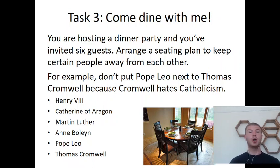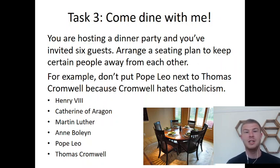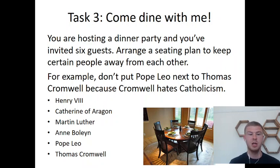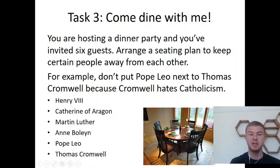Last task — a fun one to finish with. You're hosting a dinner party and you've invited six guests: Henry VIII, Catherine of Aragon, Martin Luther, Anne Boleyn, Pope Leo, and Thomas Cromwell. You need to arrange a seating plan to avoid putting certain people next to each other. For instance, don't put Pope Leo next to Thomas Cromwell because Cromwell hates Catholicism. You might not want to put Catherine of Aragon next to Anne Boleyn because that's the first and second wife — they're probably not going to get on. Try and explain around your table plan why you've chosen to put certain people there. For example, you might put Martin Luther and Thomas Cromwell together because not only do they love black hats and look very similar, they're also both Protestant so they might get along.